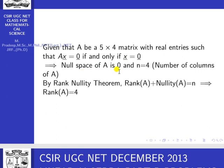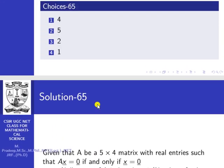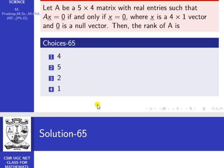Let A be a 5 by 4 matrix. The null space of A is 0, and n equals 4, where n is the number of columns of A. By the rank-nullity theorem, rank of A plus nullity of A equals n. The nullity of A is 0 and n is 4. So rank of A plus 0 equals 4, therefore rank of A equals 4. The first option is correct.